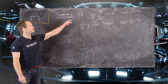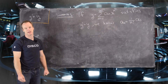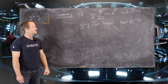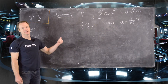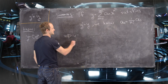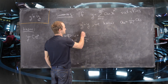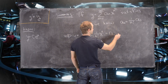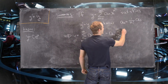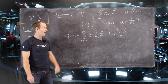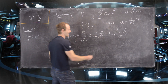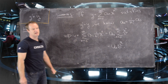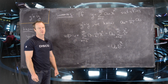To summarize: if a power series sum of a sub n times x to the n satisfies y prime equals y, then the coefficients satisfy a sub n equals 1 over n factorial times a sub 0. So y equals the sum n equals 0 to infinity of a sub 0 times (1 over n factorial) times x to the n, which equals a sub 0 times the sum of x to the n over n factorial — the well-known power series for e to the x. Therefore y equals a sub 0 times e to the x, the same solution we'd find on the first day of differential equations class.